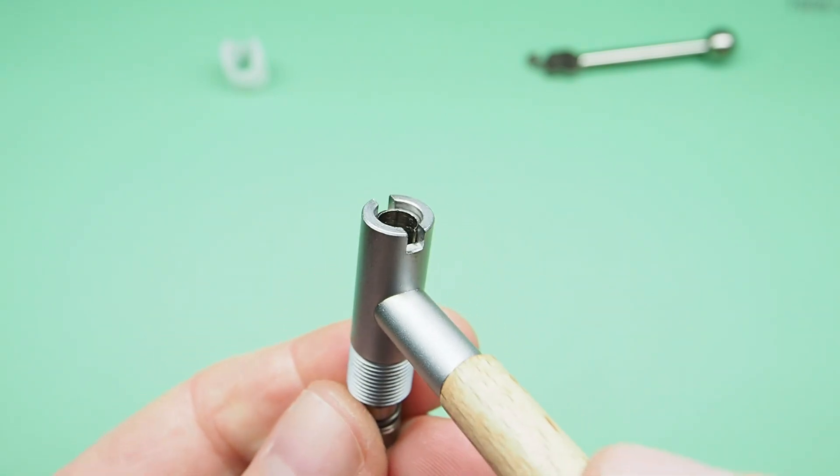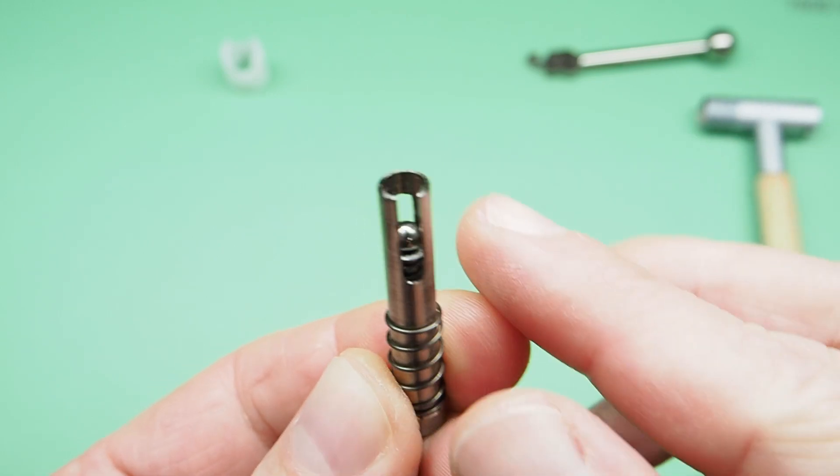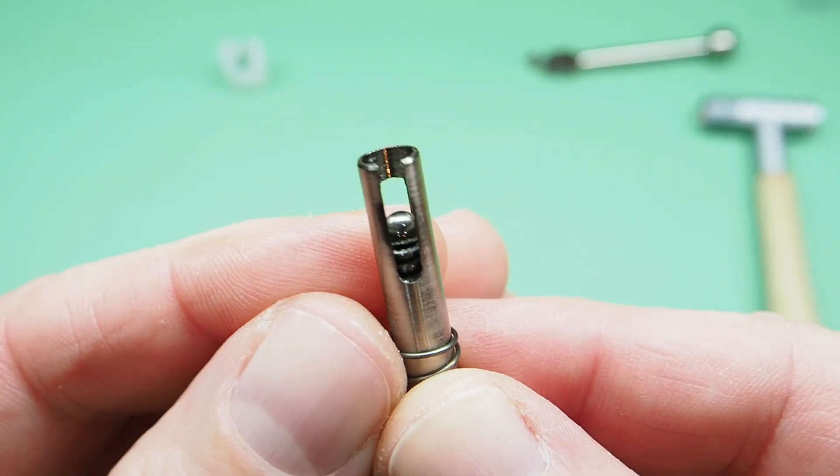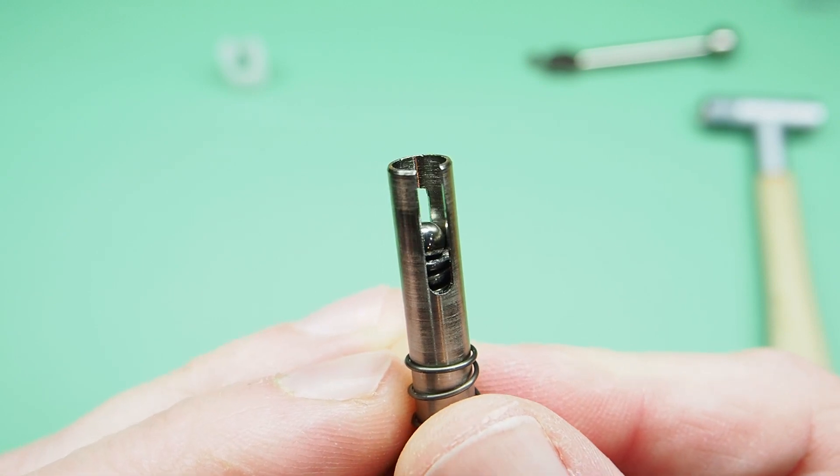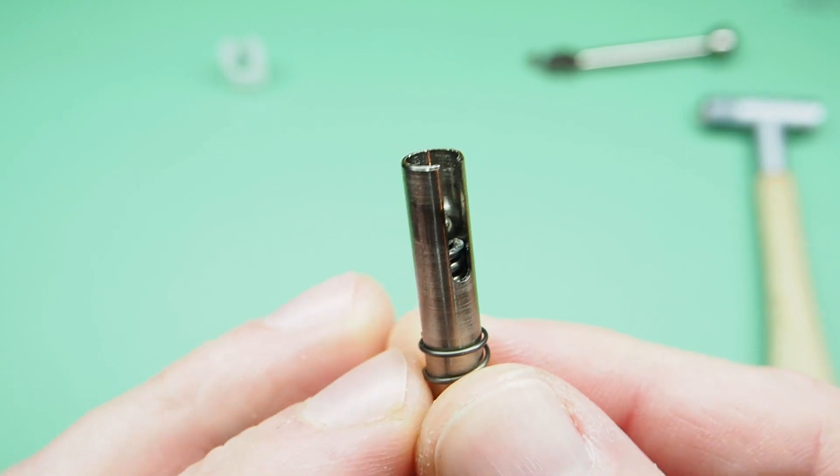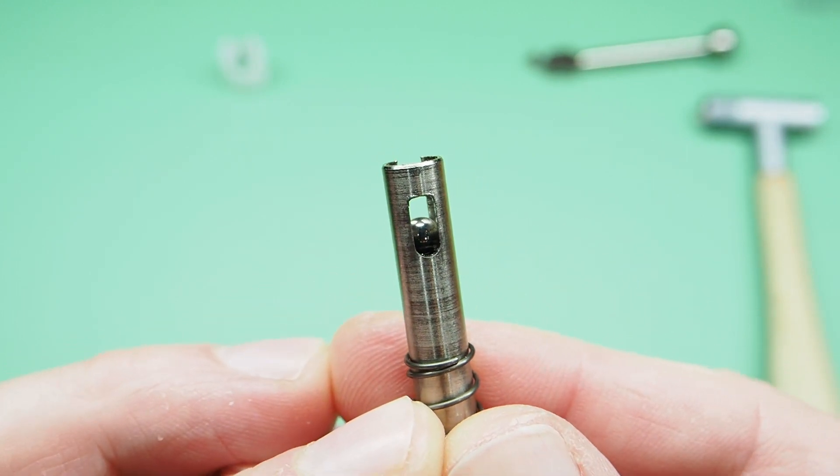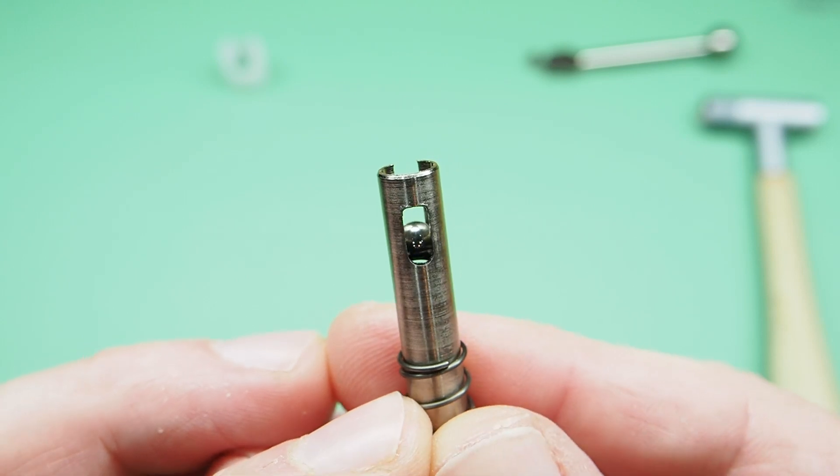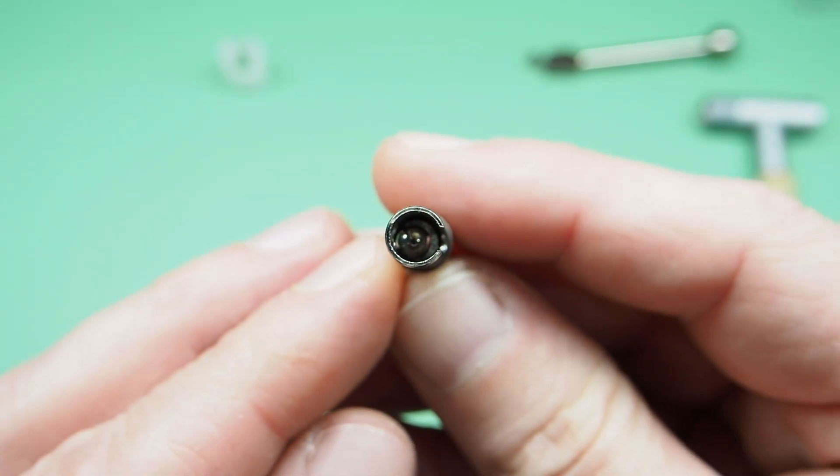Now you can remove the shaft. And here you can see the ball bearing and a spring below it. Let me show you from the other side. And from the top you can see the ball bearing inside.